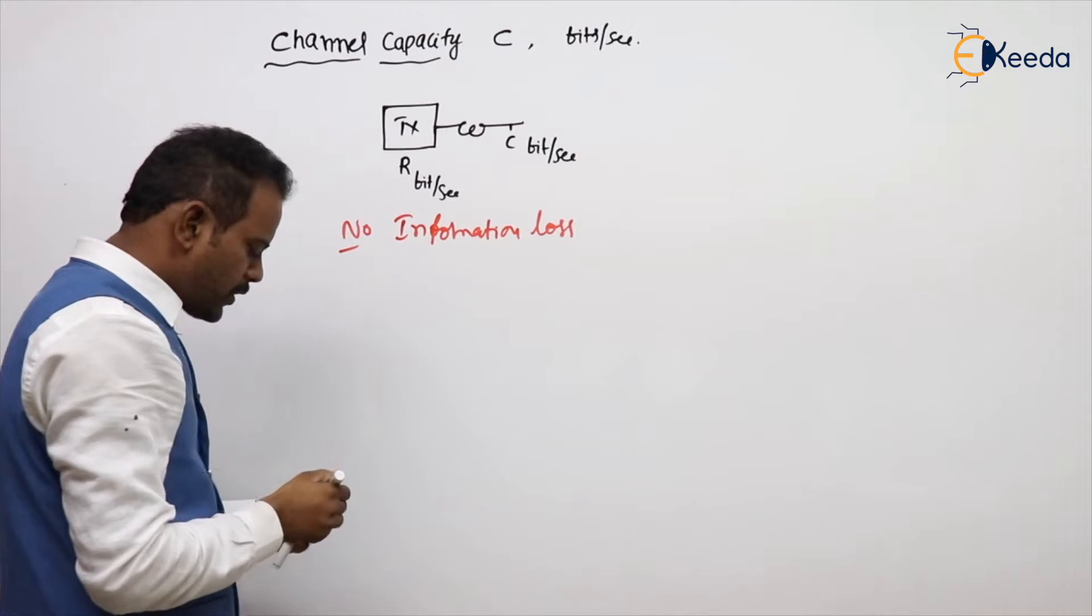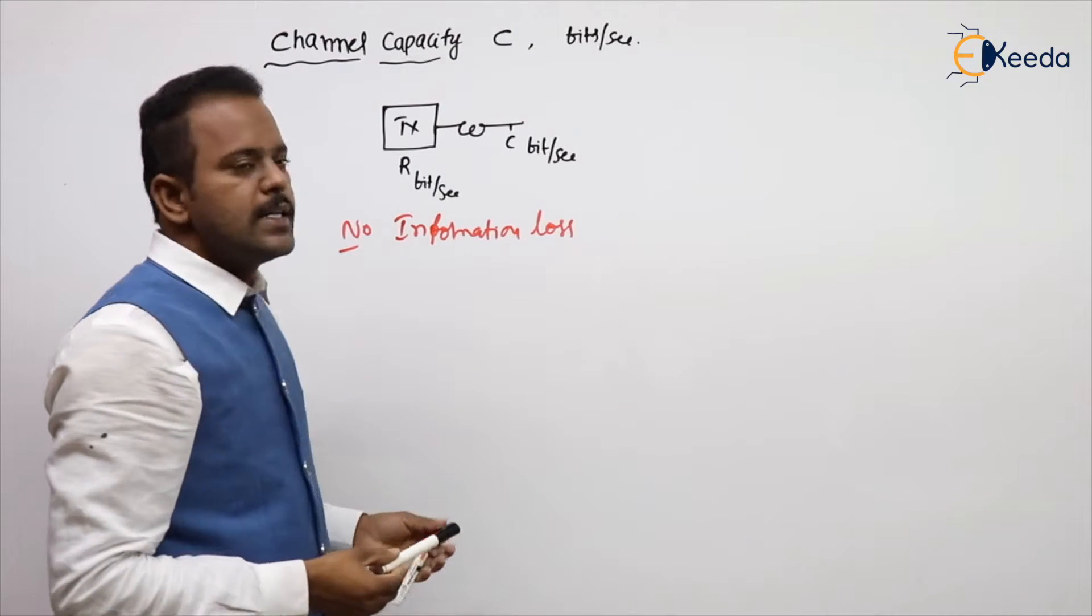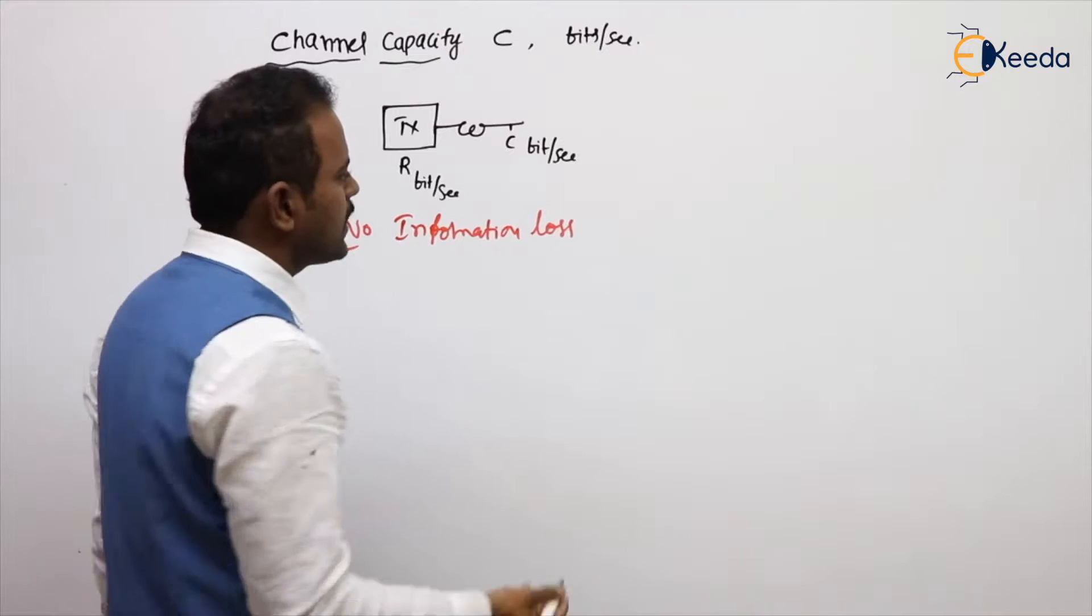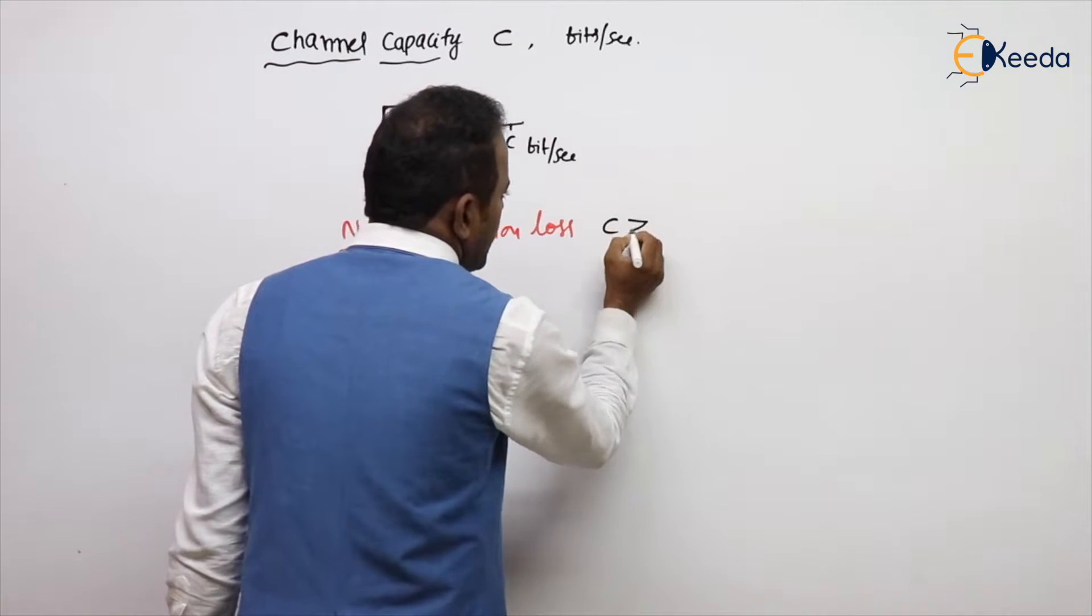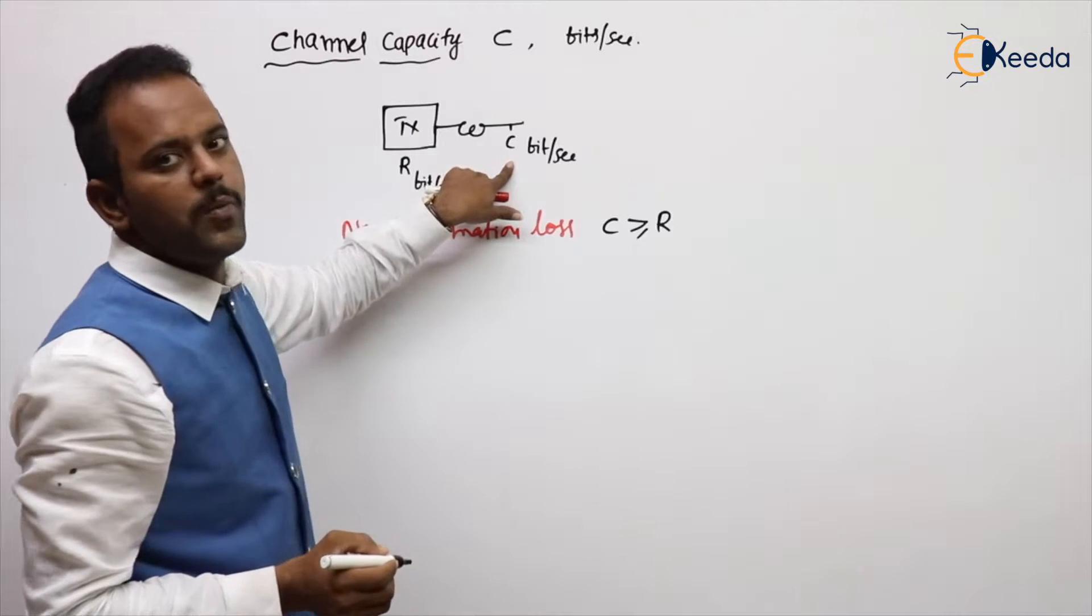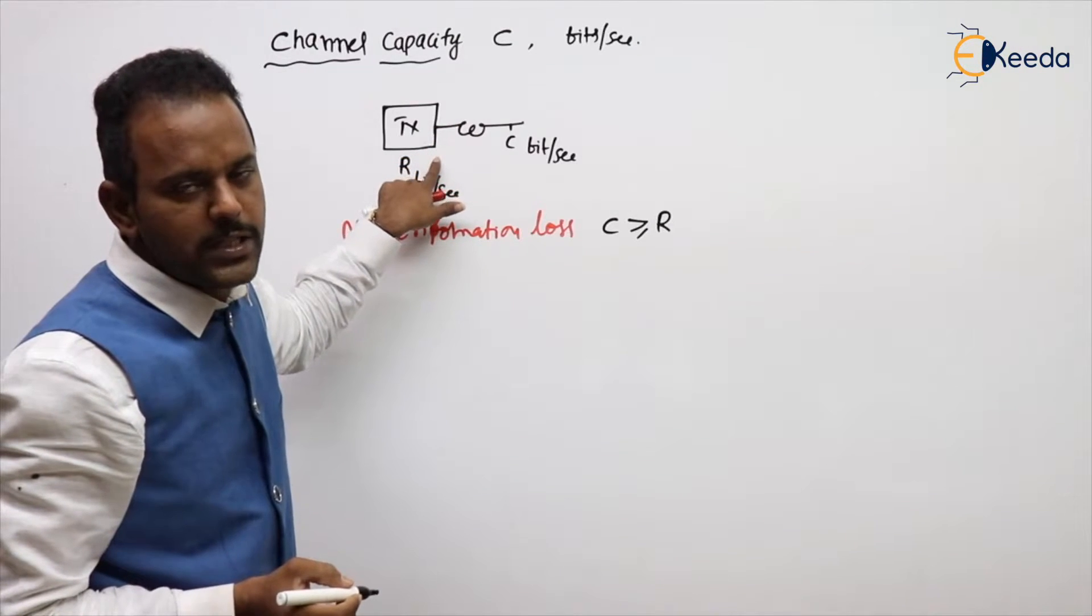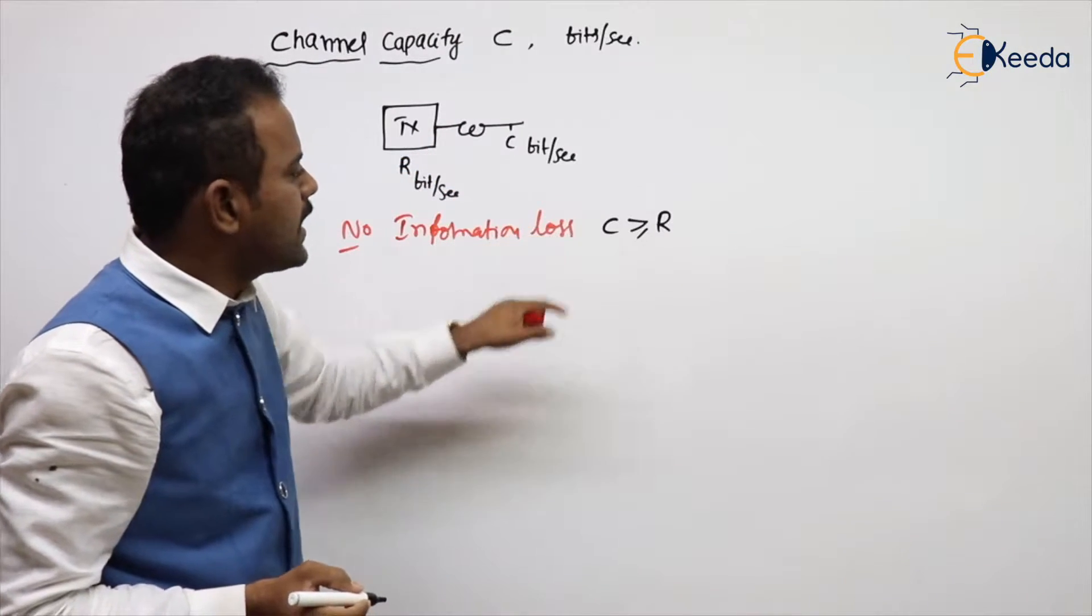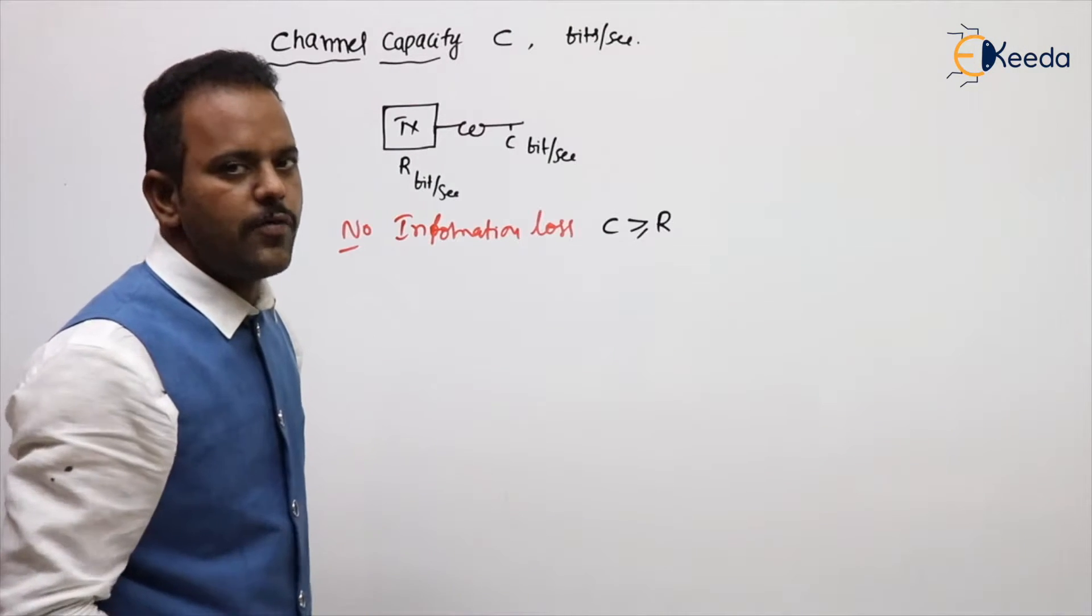For no information loss, what should be greater? C should be greater or R should be greater? As a general thing, C should be greater than or equal to R. The carrying capacity should be more than the number of bits generated. So if C greater than R, then there is no loss of information.